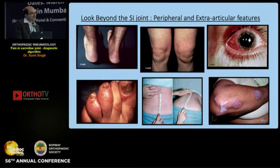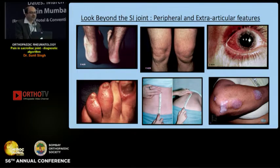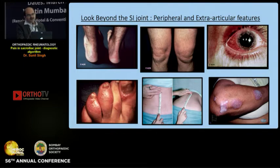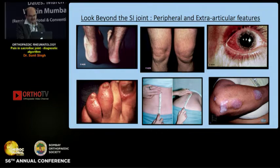During examination one also looks beyond the SI joint at peripheral musculoskeletal sites — is there enthesitis at the Achilles tendon or plantar fascia, any dactylitis, synovitis? Clues can also come from the skin, which may show psoriasis, or the eye, which may have evidence of iritis.